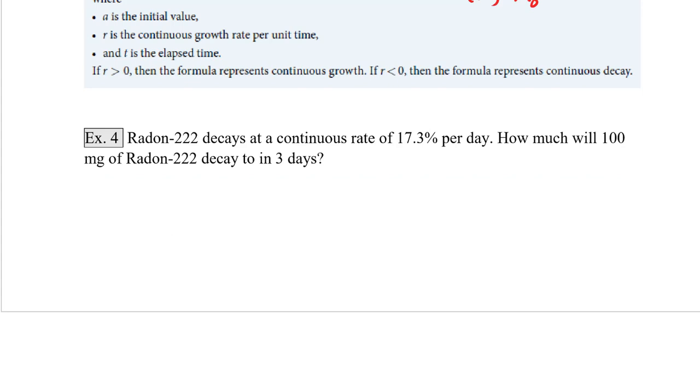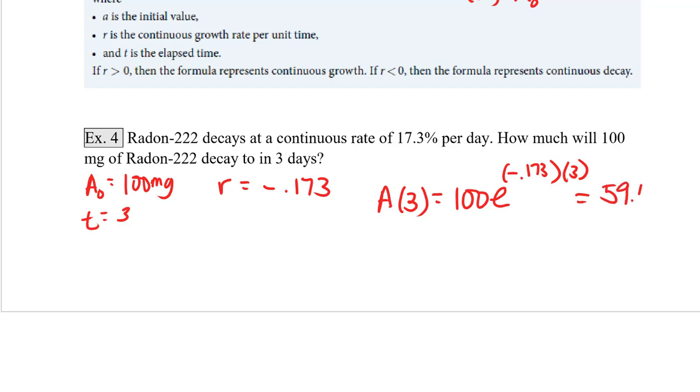Example 4: Radon-222 decays at a continuous rate of 17.3% per day. How much will 100 milligrams of radon-222 decay to in 3 days? So we know that our initial value is 100 milligrams. We know that t is equal to 3 days. And they've given us our r. Now we need to write that as a percentage. But it says it's decaying, so we can't use positive 17.3%. We actually have to say that this is going to be negative 0.173. So we'll say then that A, after 3 days, is equal to our initial value, 100, e to the negative 0.173 times 3. And after 3 days, we will decay to 59.5 grams.